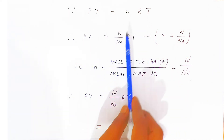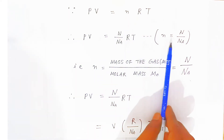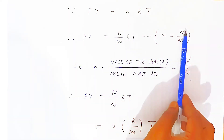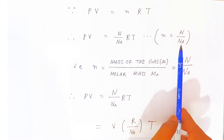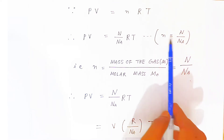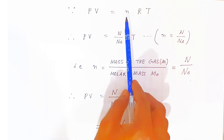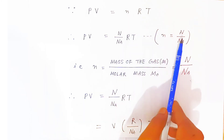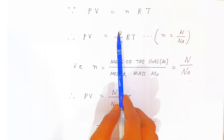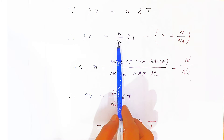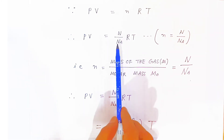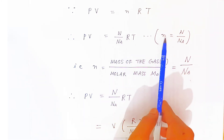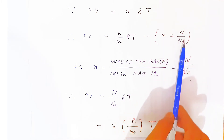Now, how do you find the number of moles? The number of gas molecules divided by Avogadro's number gives the number of moles. So instead of n (moles), you can write N divided by Nₐ, where N is the number of atoms of the gas and Nₐ is Avogadro's number.